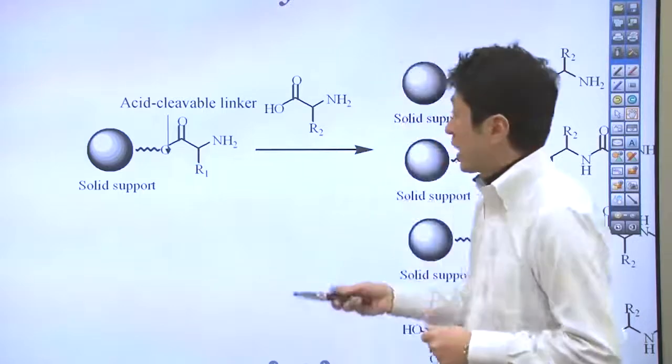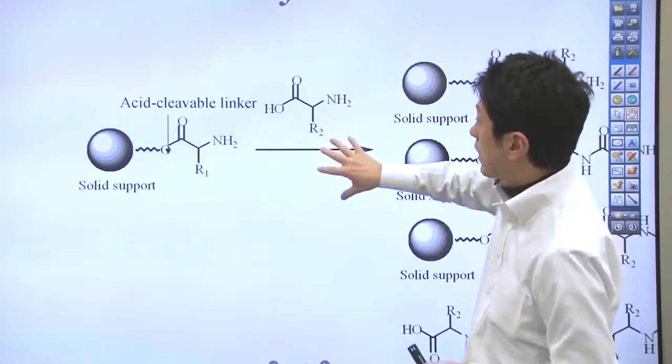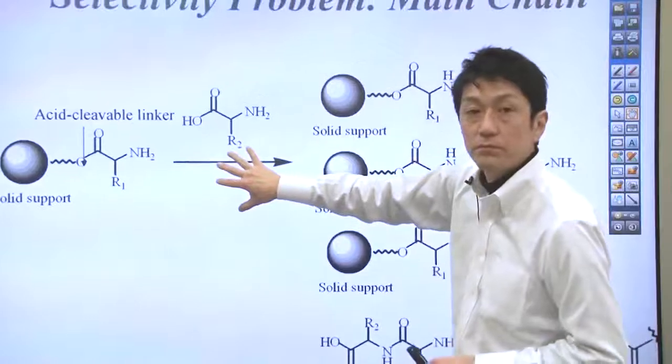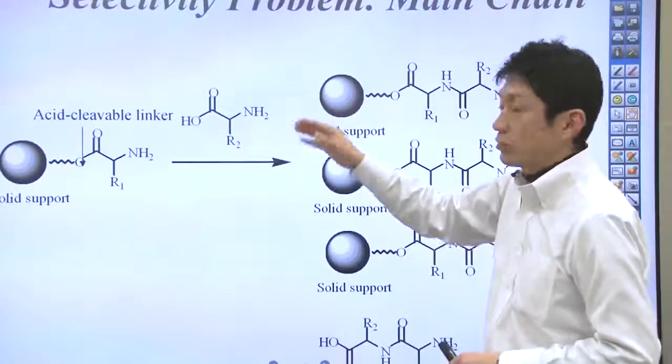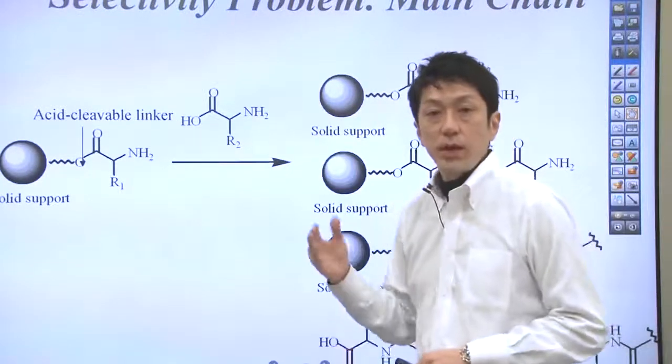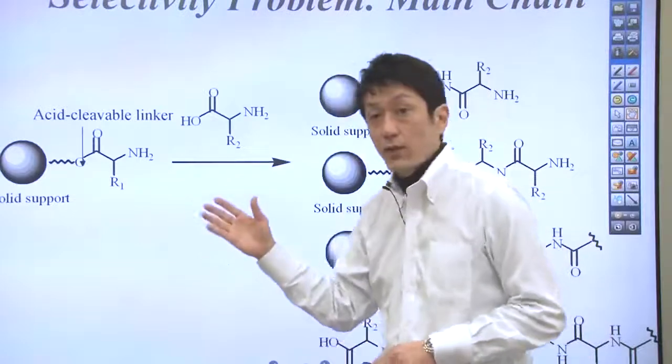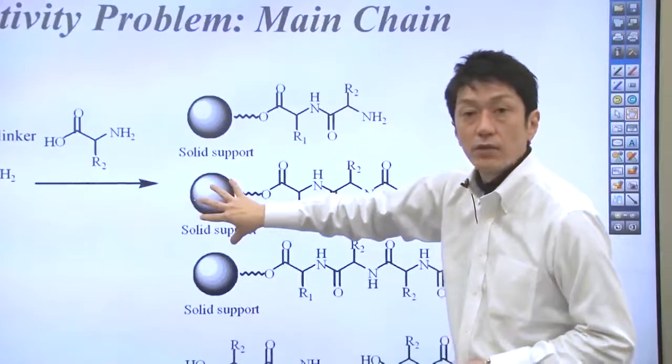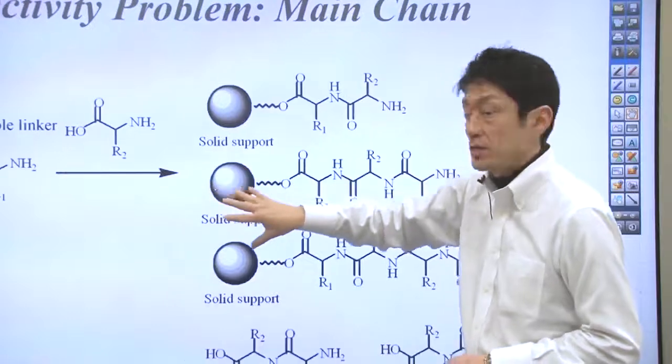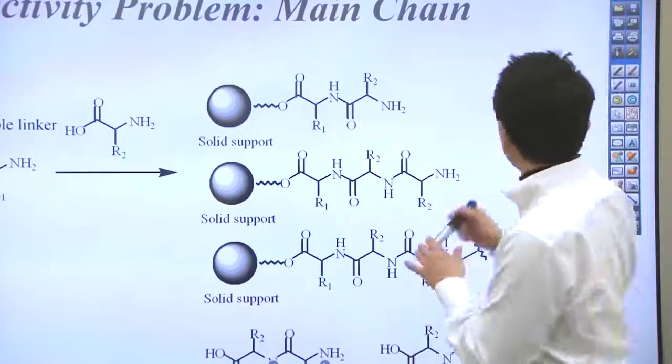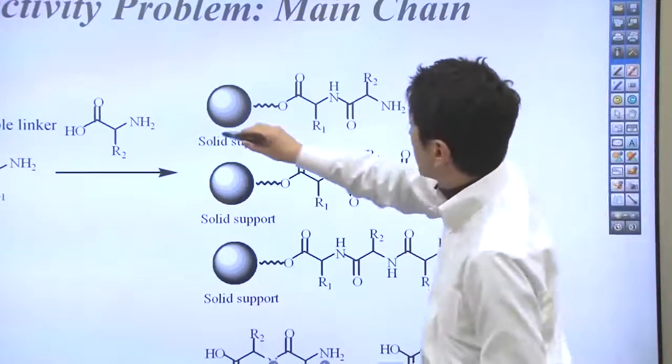The second amino acid is added in large quantity. The addition of condensation reagent and the base gives the desired coupling between the first and second amino acid on the bead. So this is the right product you want to make.